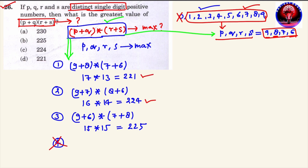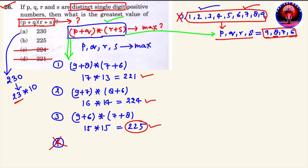तीनों combinations में maximum value 225 मिली है। Options में देखें तो C और D को cut कर सकते हैं। Option A में 230 दिया है — इसको factorize करें तो 23 × 10 आता है। 23 एक prime number है, और P, Q, R, S single digit positive numbers हैं जिनकी maximum sum 9+8 = 17 ही हो सकती है, इसलिए 23 बनाना impossible है। इसलिए option A भी cut। So our answer will be option B: 225.